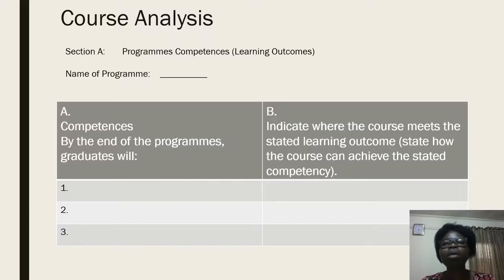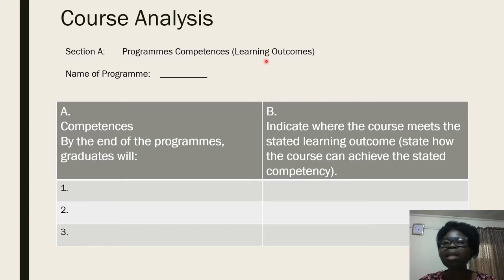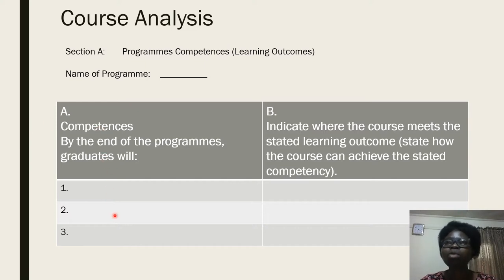I really want to spend more time on the course analysis. In this area, you have Session A — you put in your program and the name of the program. We look at the area of learning outcome. We have two columns here, A and B. Here you state the learning competencies. In our own context, you have NUC that has given us the benchmark, and when you have such a benchmark, you put the benchmark as it is stated here.